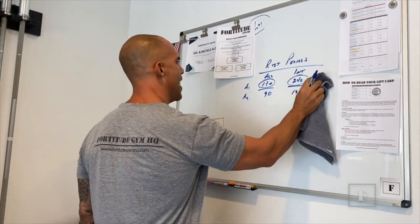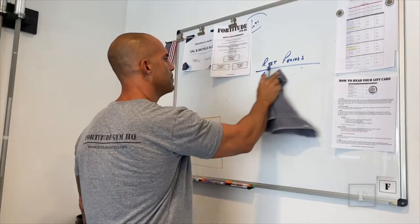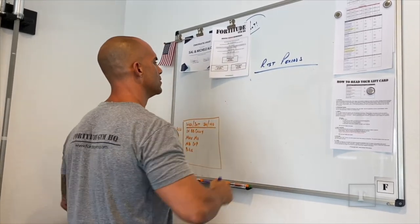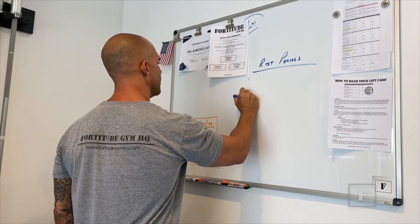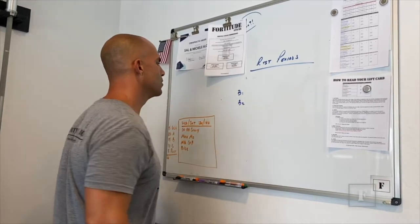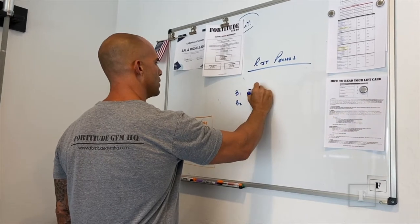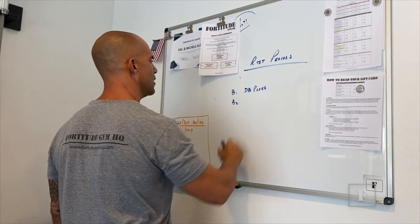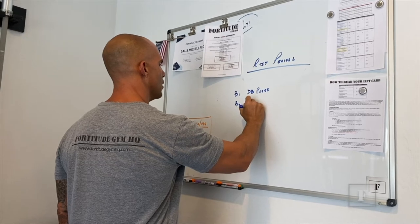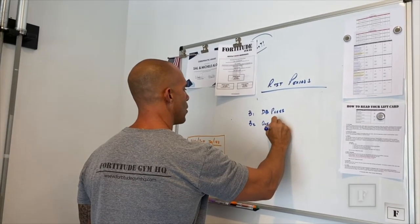If we have single limb movements, so let's say B1, B2. Let's say B1 is a dumbbell press, but B2 is a one arm row.